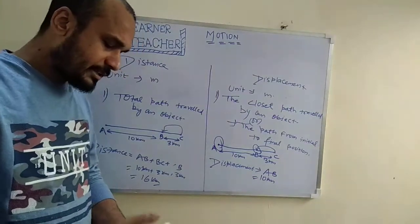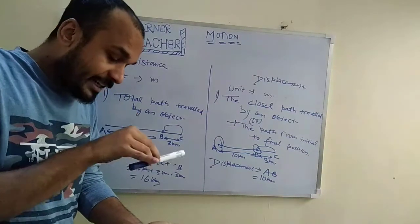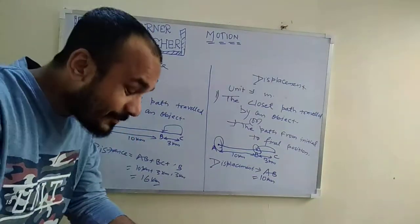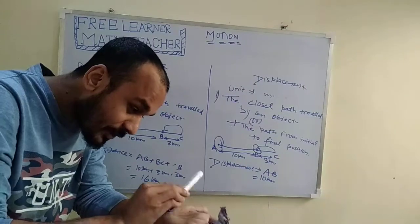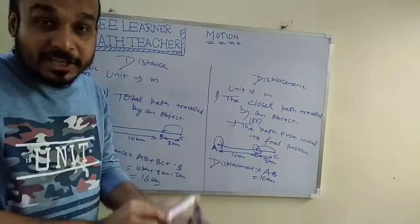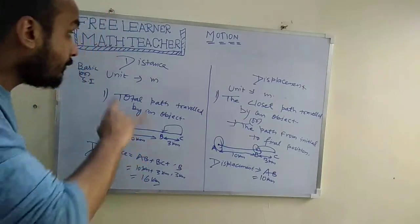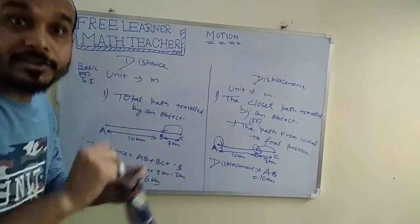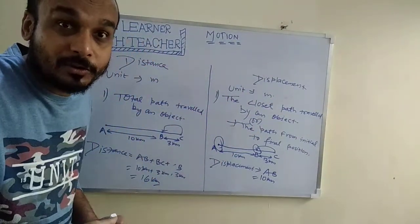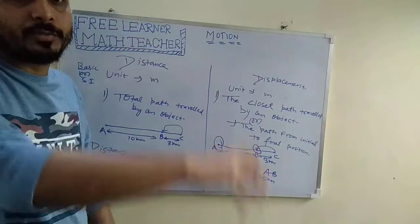Suppose an object moves from one point, travels around, and finally comes back to its original position. Then the displacement is zero, because the initial and final positions are the same. But the distance is not zero. From this we conclude: for a moving object, distance can never be zero. But for a moving object, displacement may be zero — it depends on the initial and final position of the object.